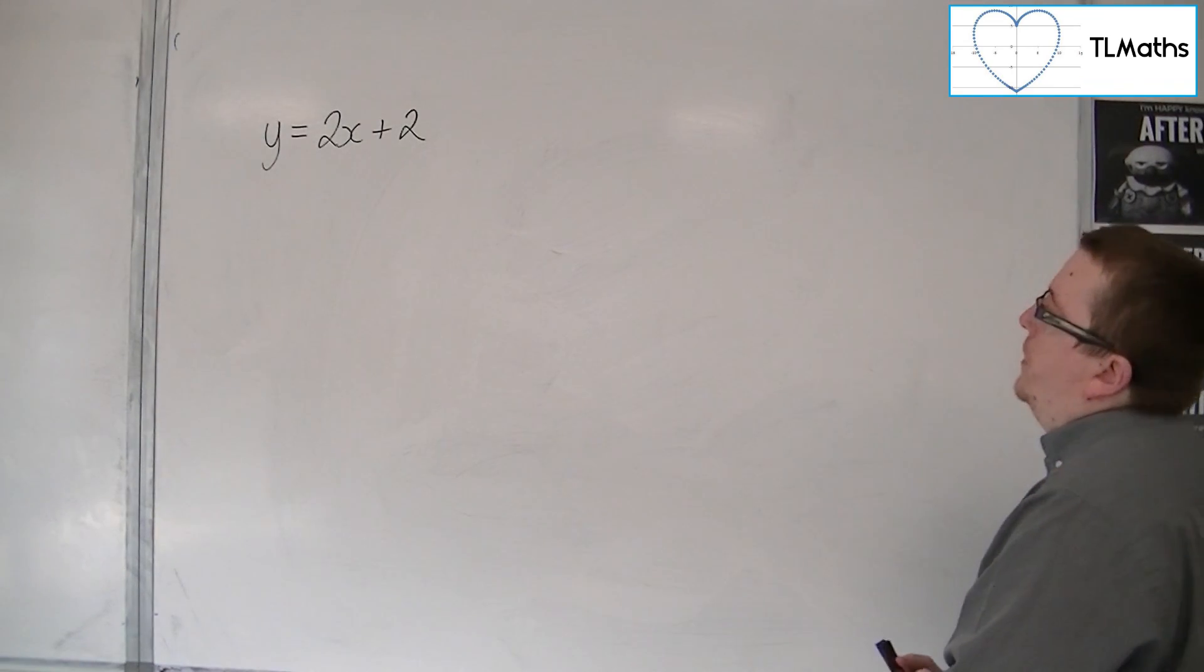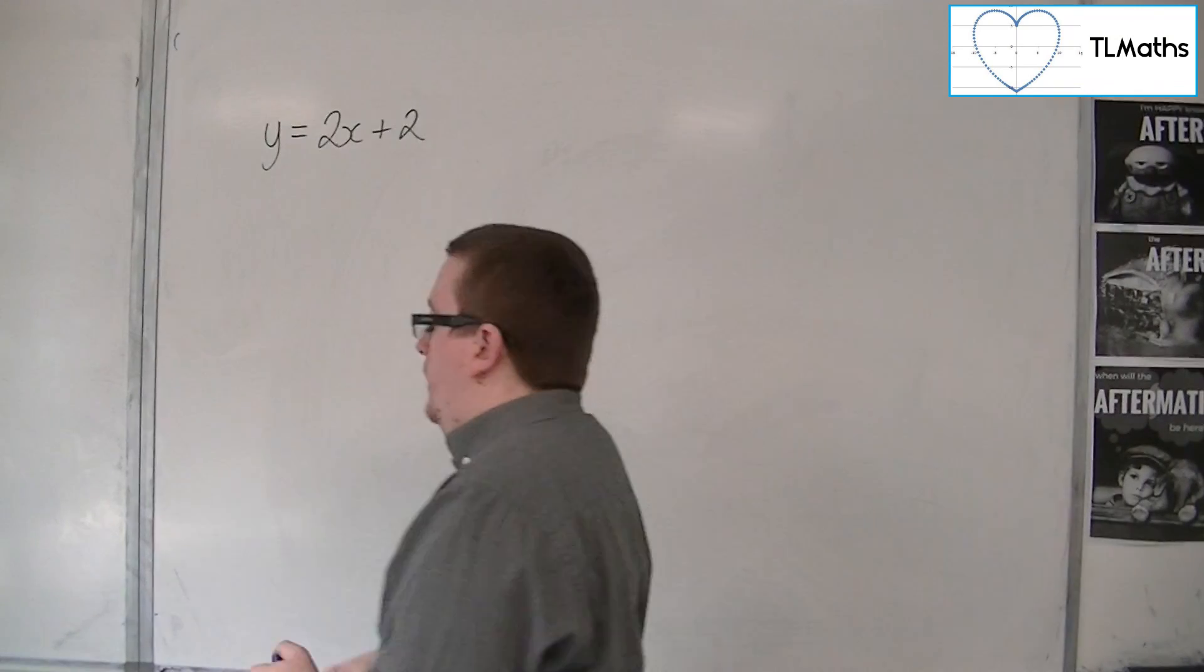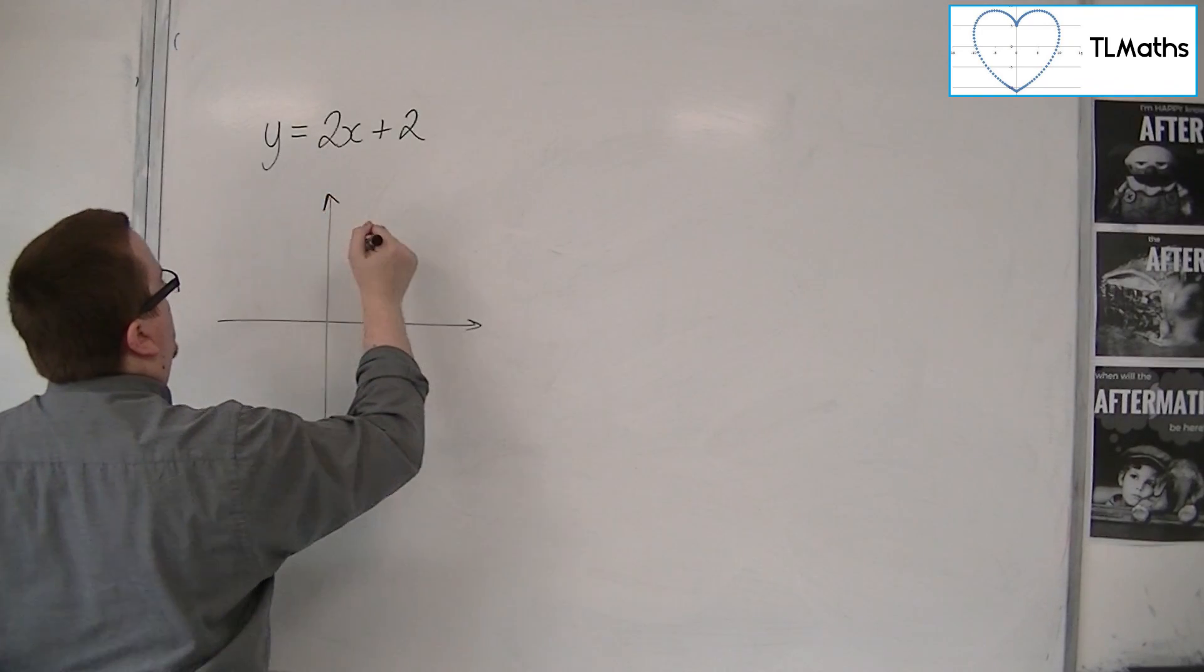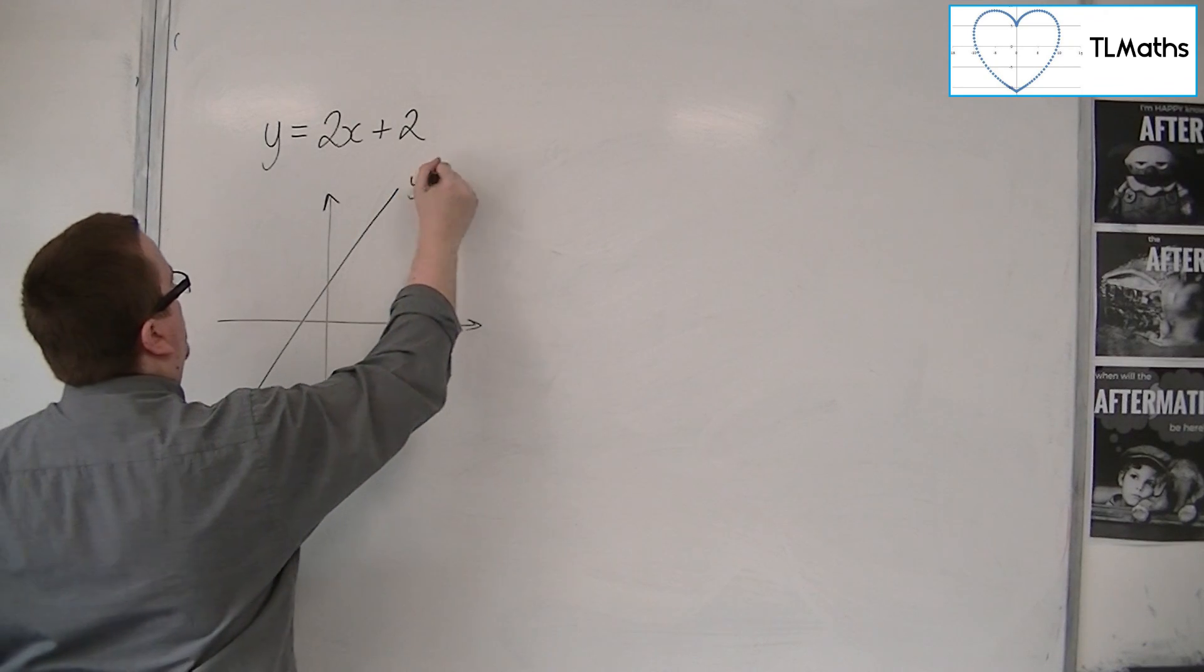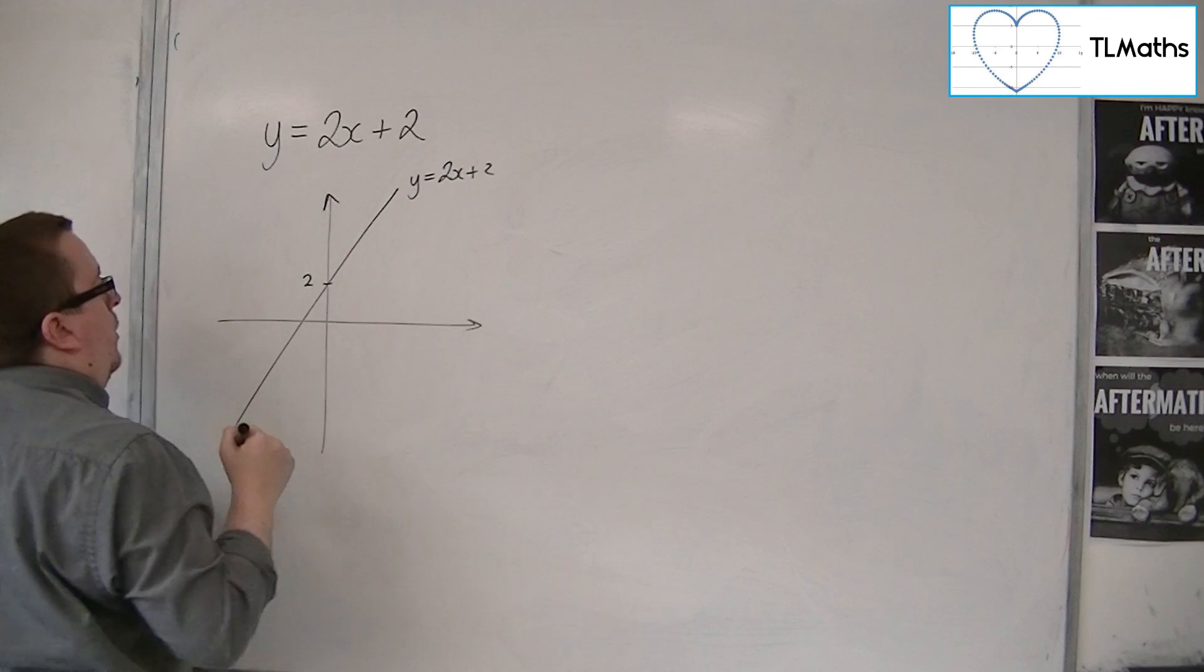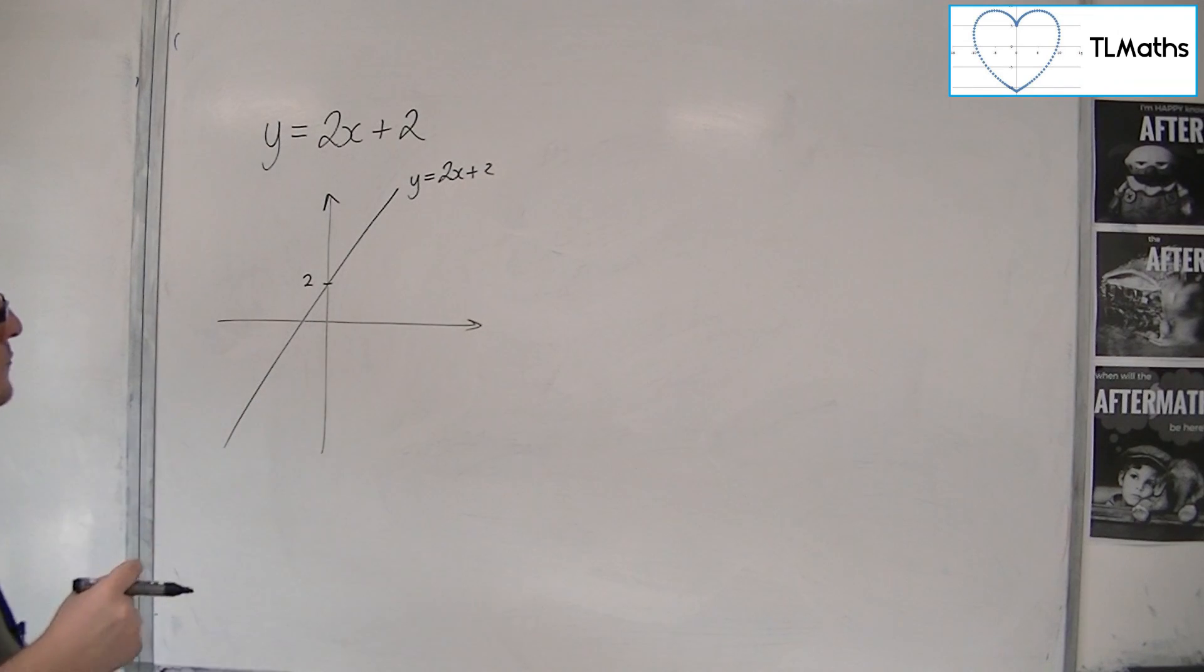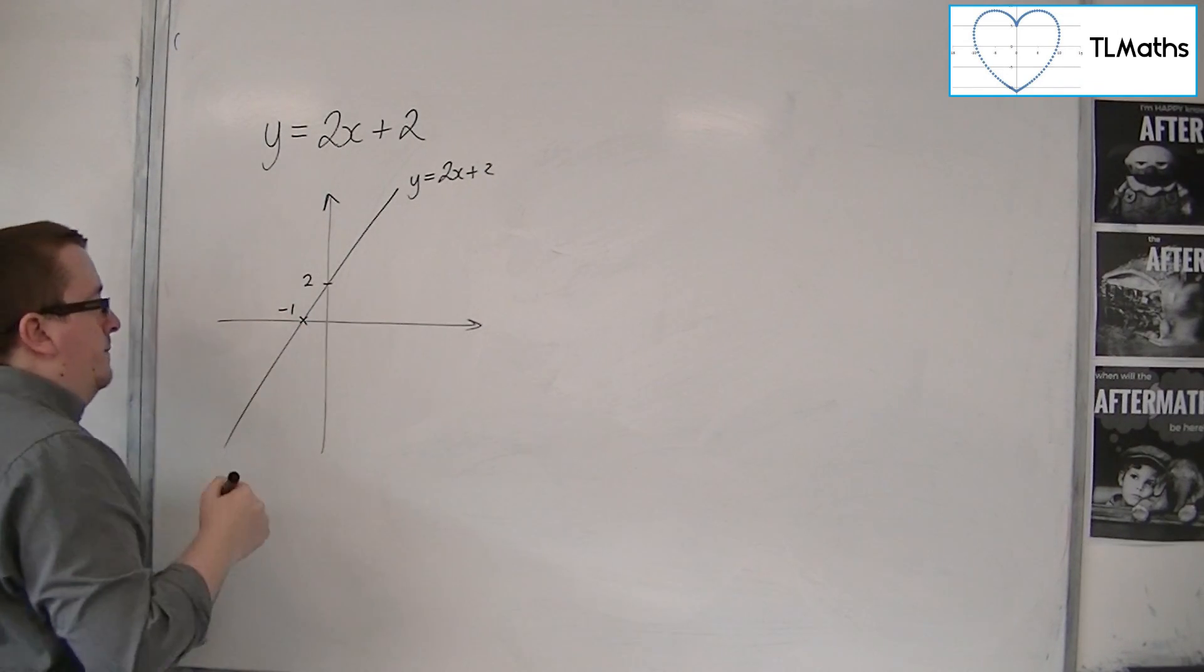So I'm going to start with the line y=2x+2. So let's draw that line. OK, so y is equal to 2x plus 2, looks something like that. Going through 2 on the y-axis. OK, and so this point would be minus 1.